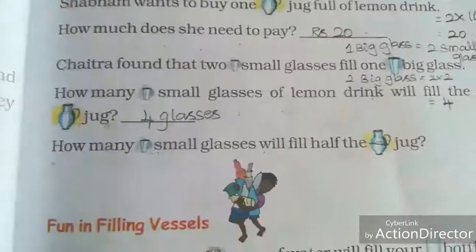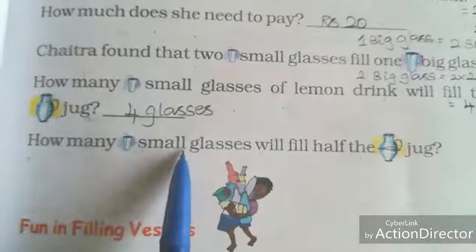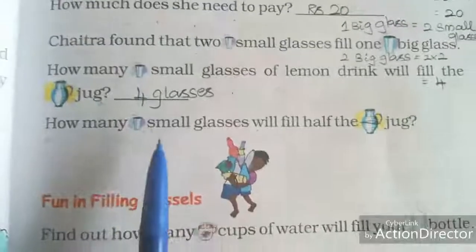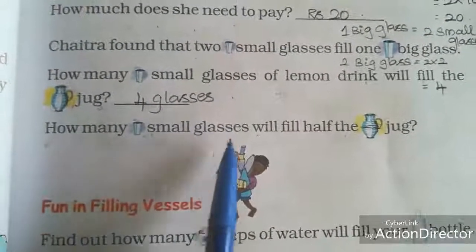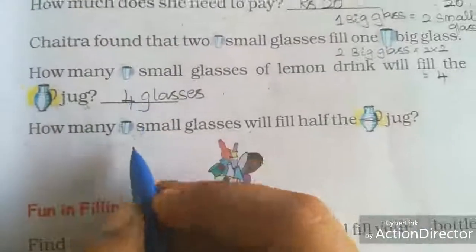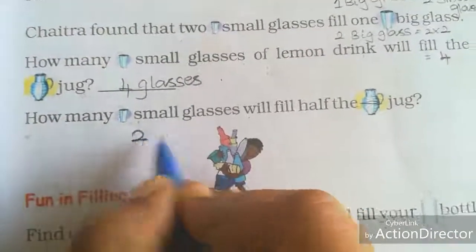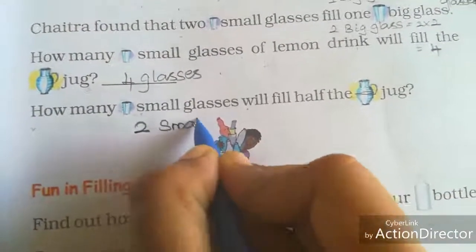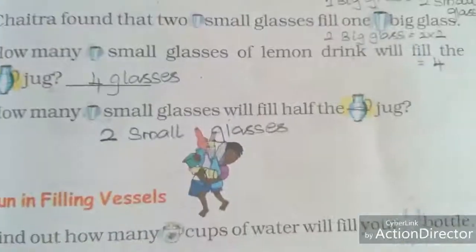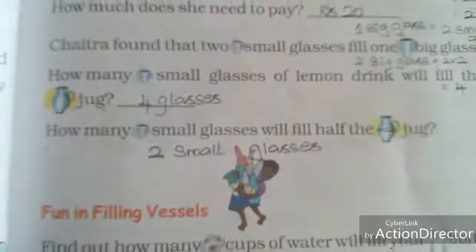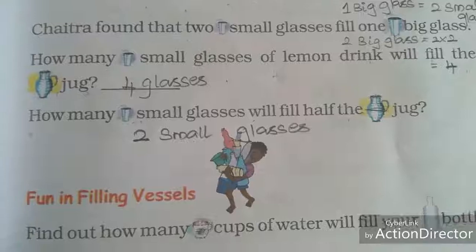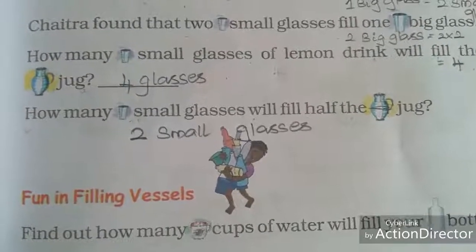How many small glasses will fill half of the jug? For a full jug we need four small glasses, so for half a jug we need only two small glasses.